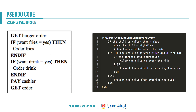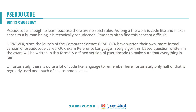A fairly basic example: 'get the burger order — if want fries equals yes then order fries.' You can clearly see that is code-like without being Python. If you copied and pasted that into Python it wouldn't work, but it is definitely code-like. Students often find pseudocode tough to learn because there are no strict rules — as long as it makes sense and is code-like, it classifies as pseudocode.